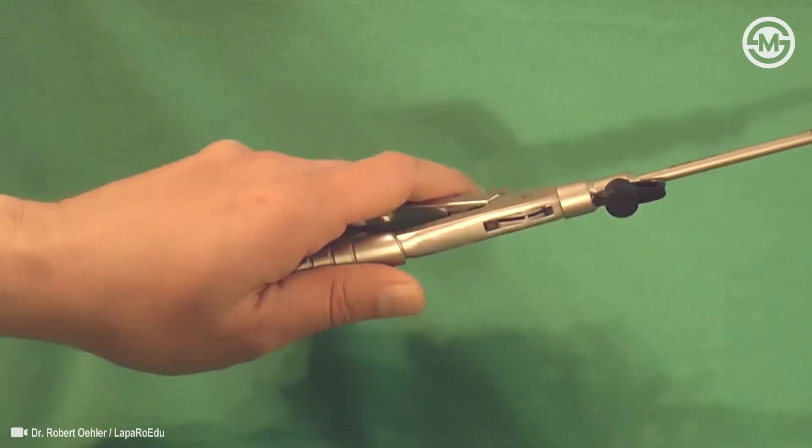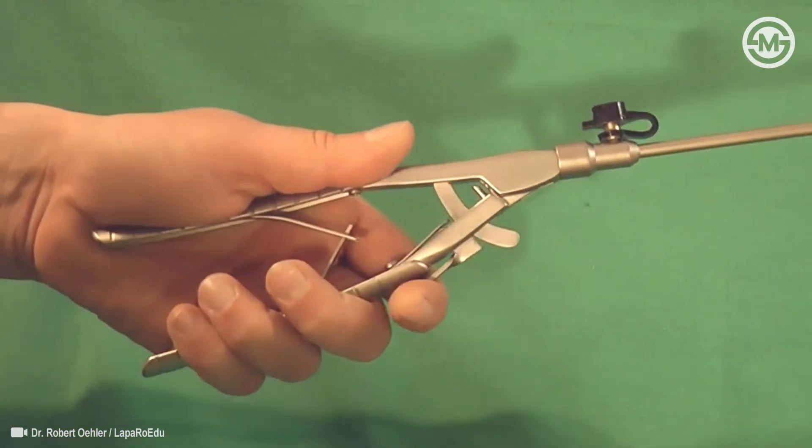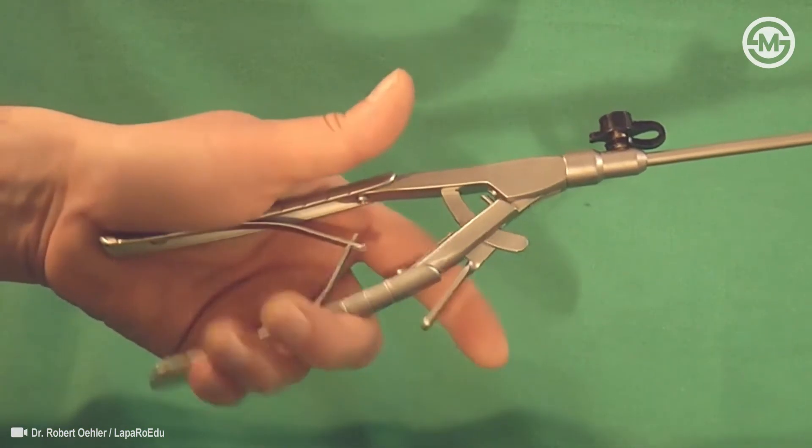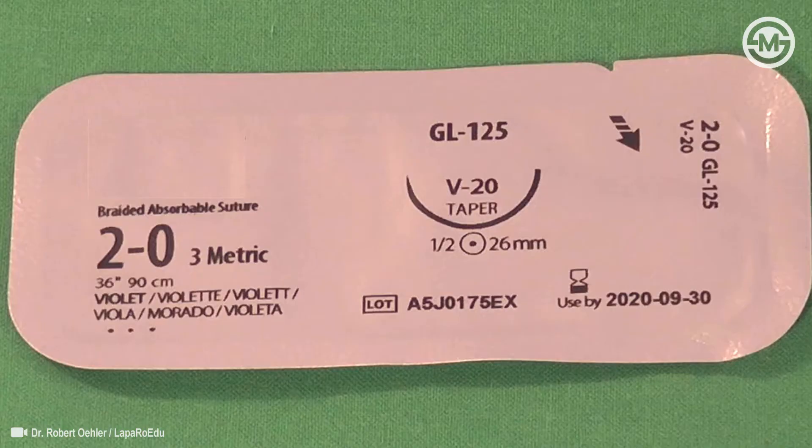This needle holder has a straight handle, which makes rotation easy. The index finger releases the grip. We use a 90cm absorbable braided suture for extracorporeal knot tying.